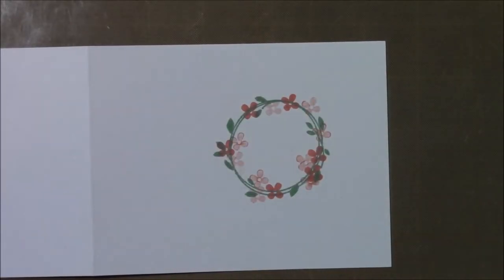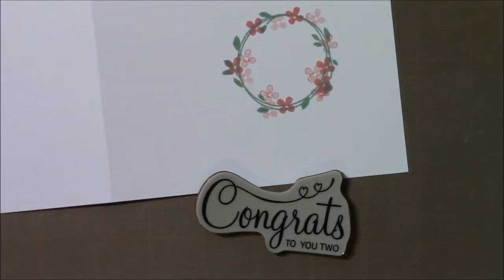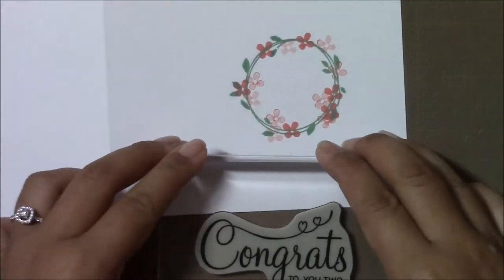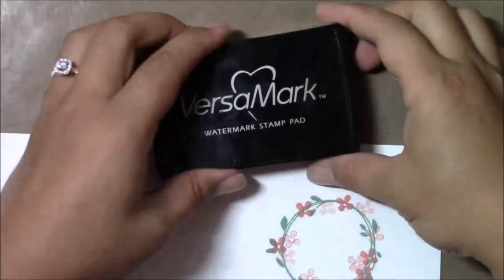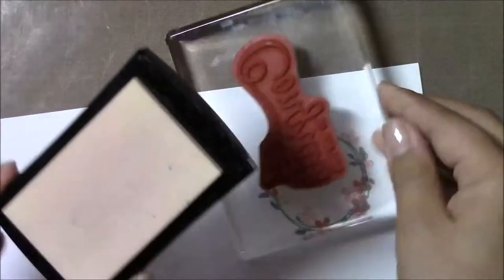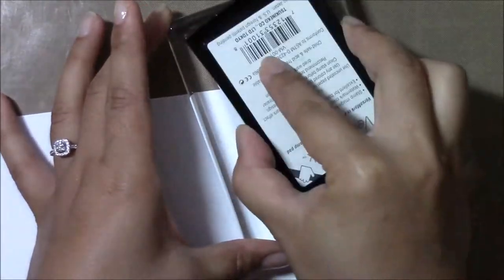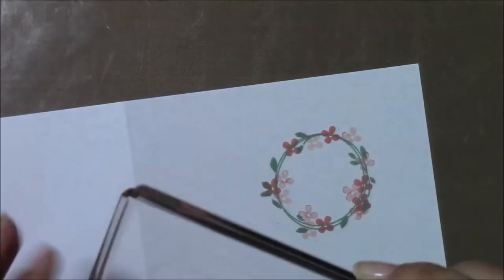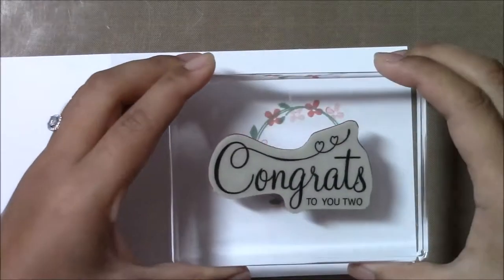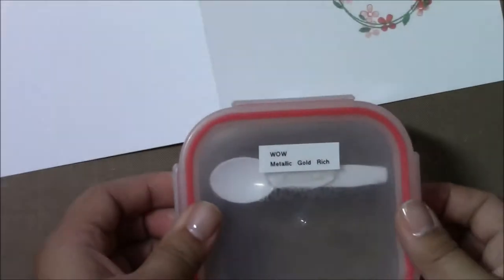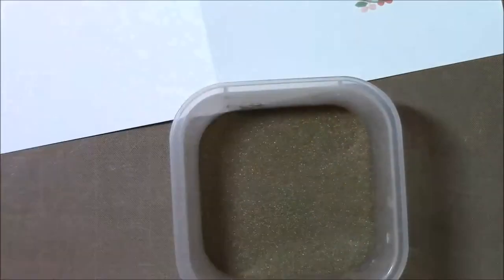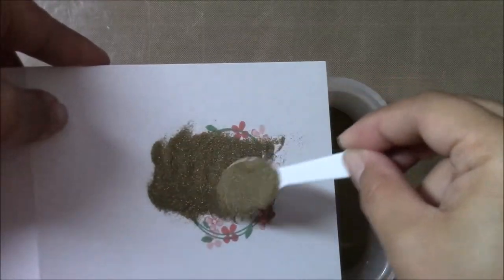So next I'm going to be doing some heat embossing. I prepared my card surface there with an embossing powder bag. I'll go ahead and mount this sentiment and I'll be stamping and inking it up with some Versamark ink. I love heat embossing, and I don't think I've ever used the gold before, so I'm pretty excited about this.